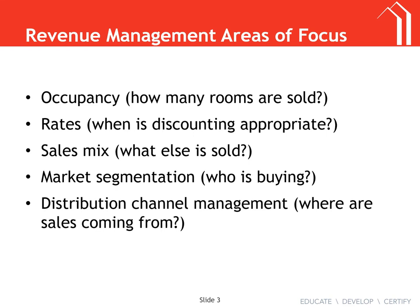Same thing with group blocks — if someone tries to book outside the group block even if they're with the company, we don't let them book at the group rate. Traditionally we don't want to tie up too much inventory with groups. Attrition is when a group does not fill their whole block — if a group commits to 100 rooms and only fills 80, they have to pay for those 20 empty rooms.